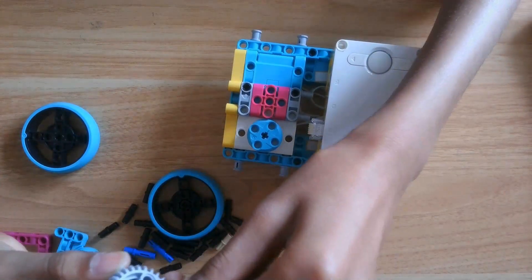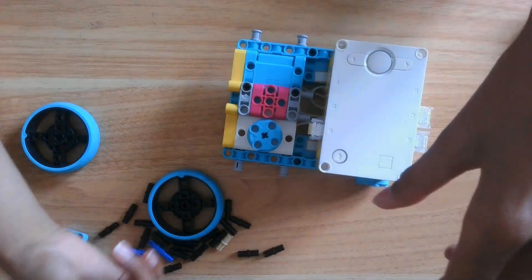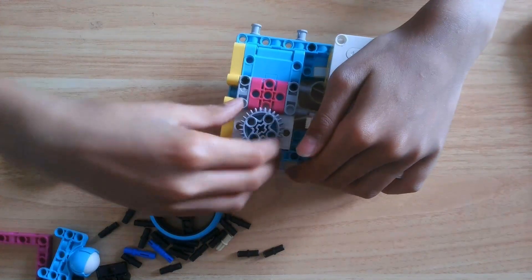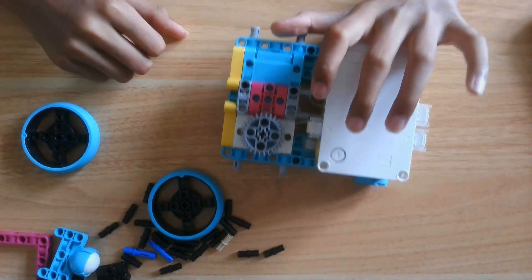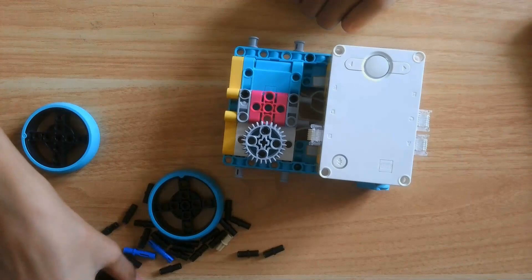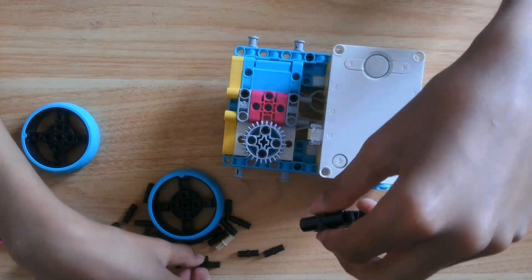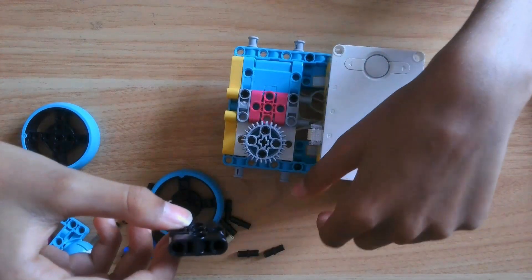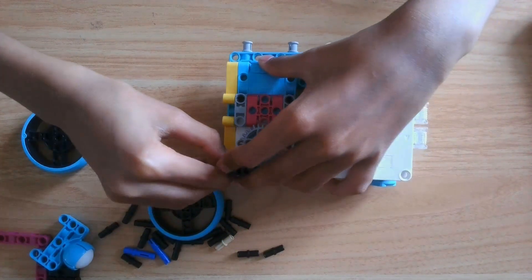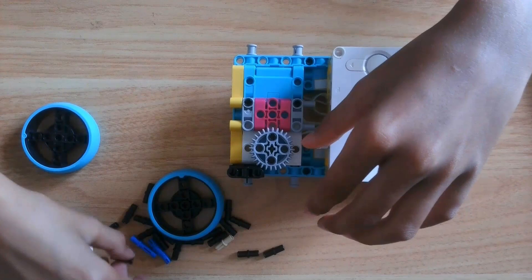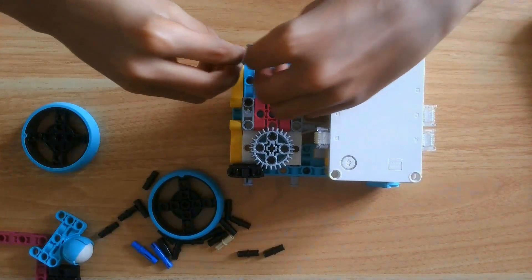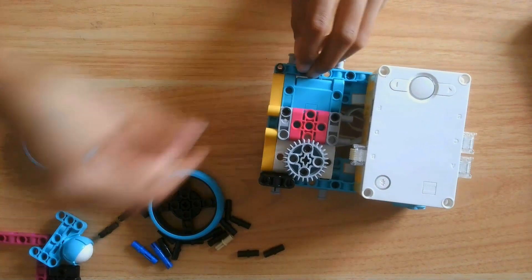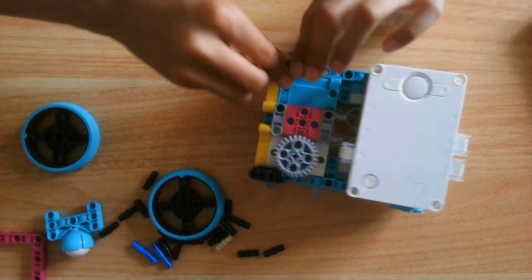Then, get two pins and a gear and put them in the robot. Now, get two pins and one more of these three by threes and put them on either side. Like so.